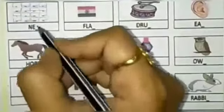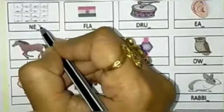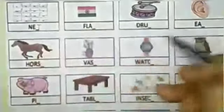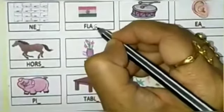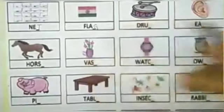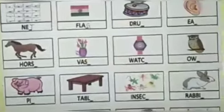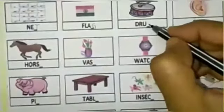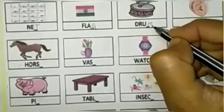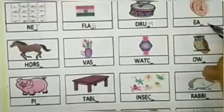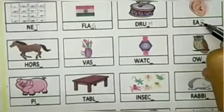Net. N-E-T. Net. Flag. F-L-A-G. Flag. Drum. D-R-U-M. Drum. Ear. E-A-R. Ear.